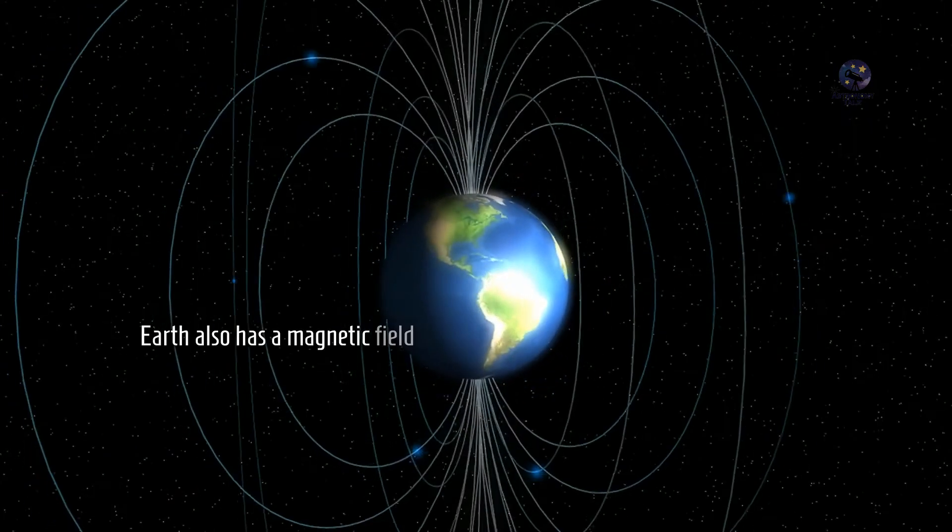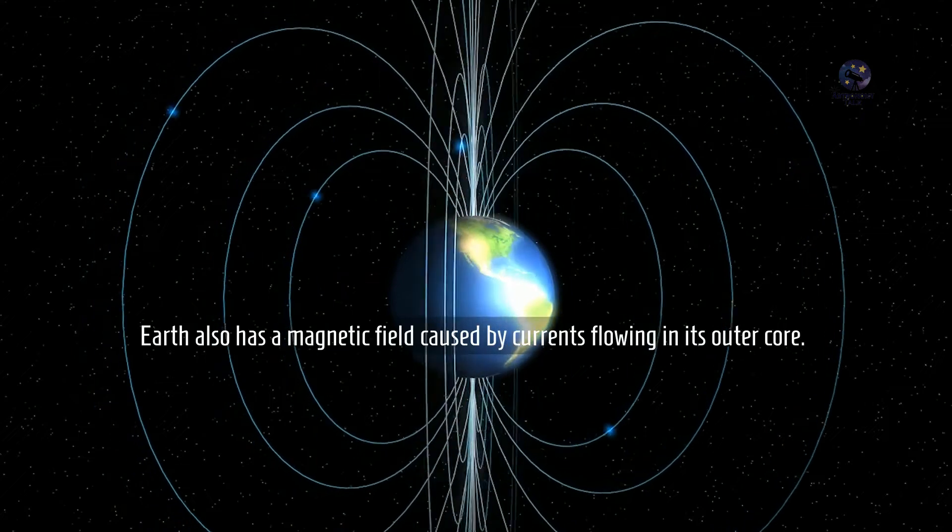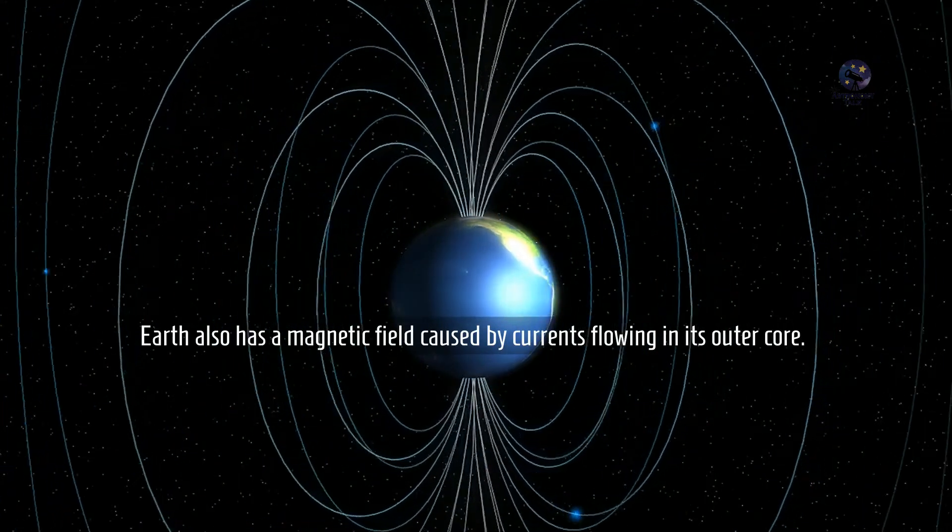Earth also has a magnetic field caused by currents flowing in its outer core.